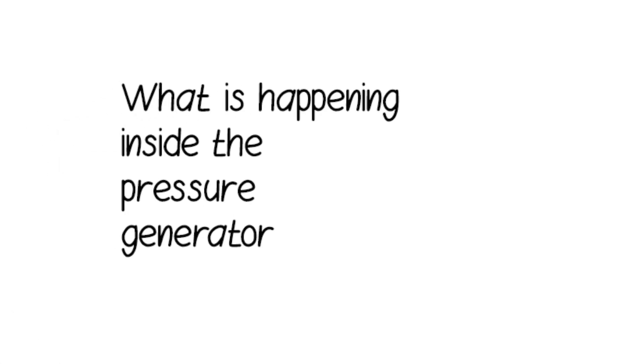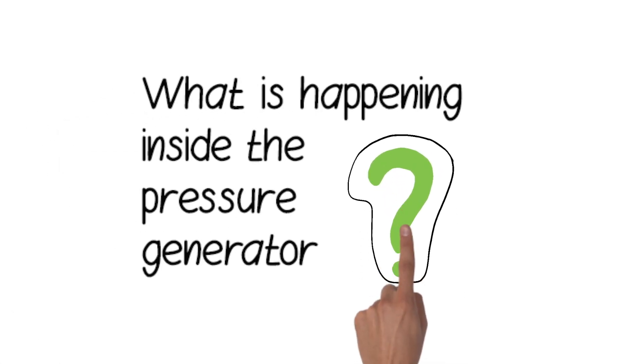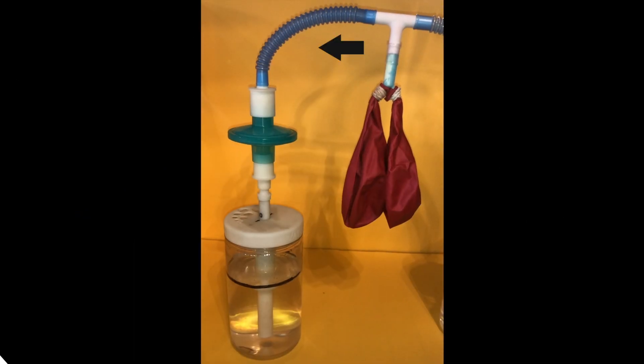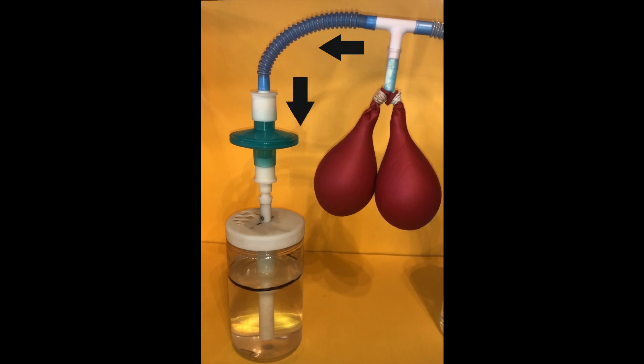So what is happening inside the pressure generator? As the gas is expelled by the patient, the only exit for the gas is blocked by the water. Since the gas cannot easily escape, positive pressure builds up inside the lungs.